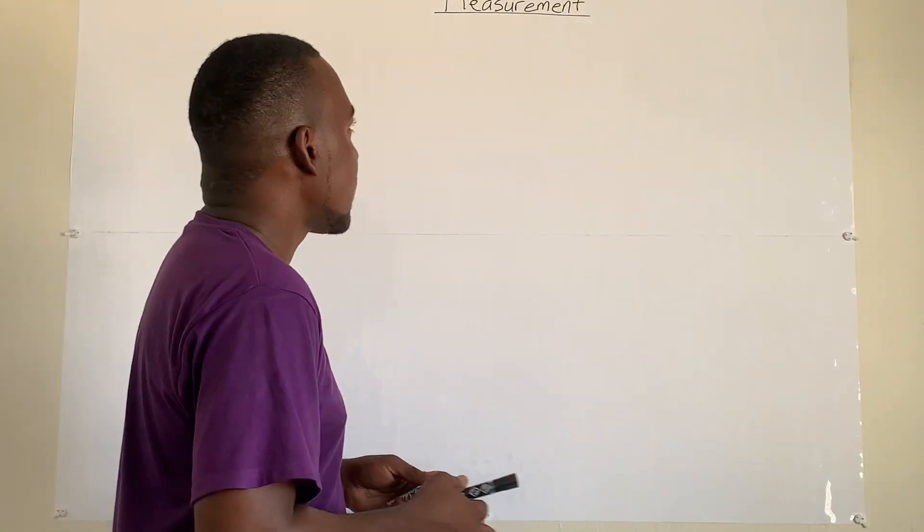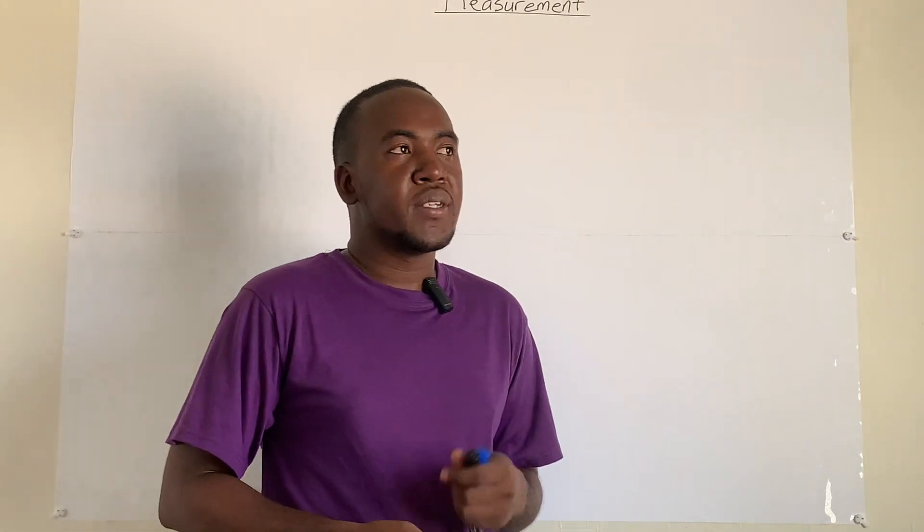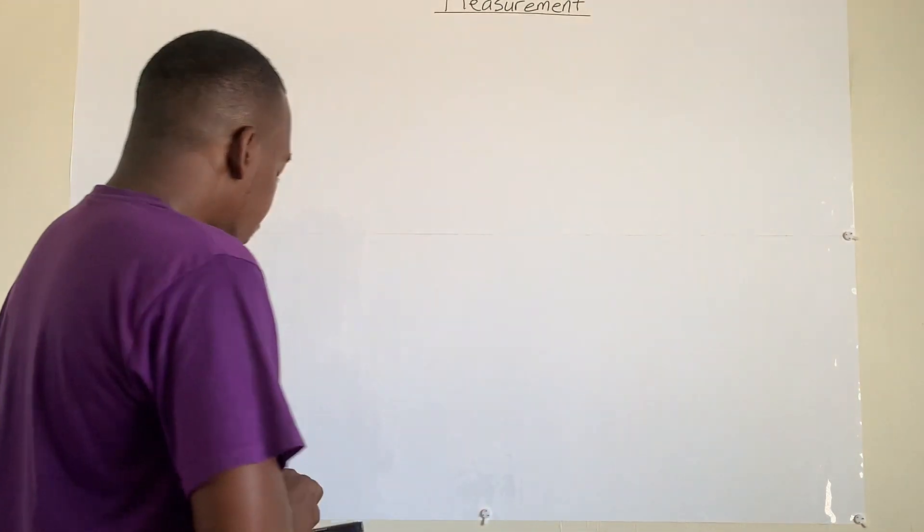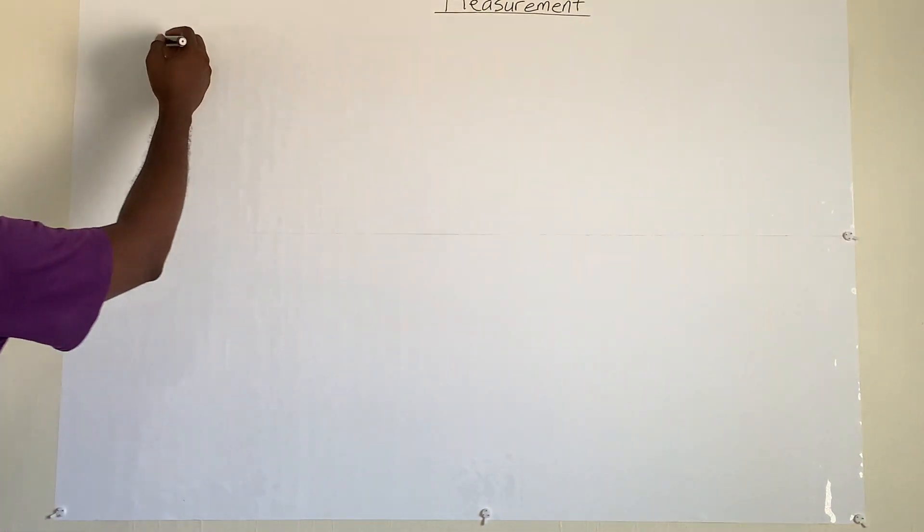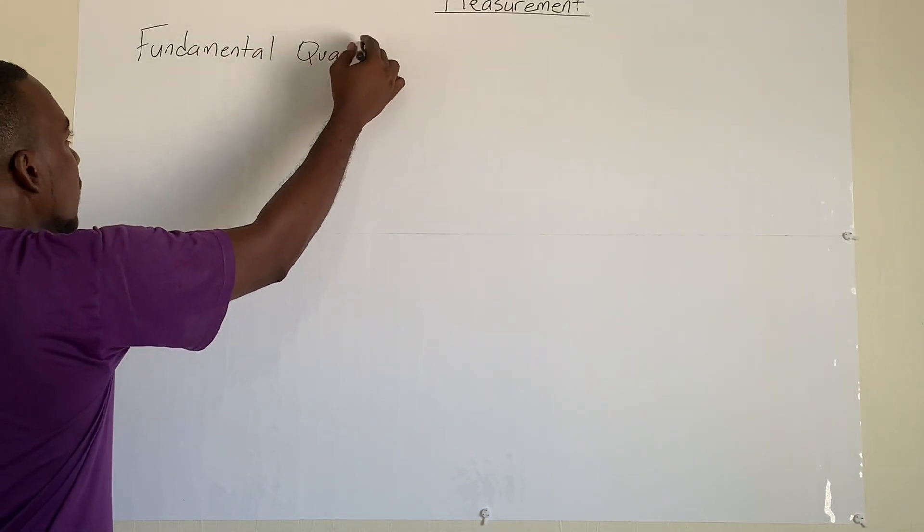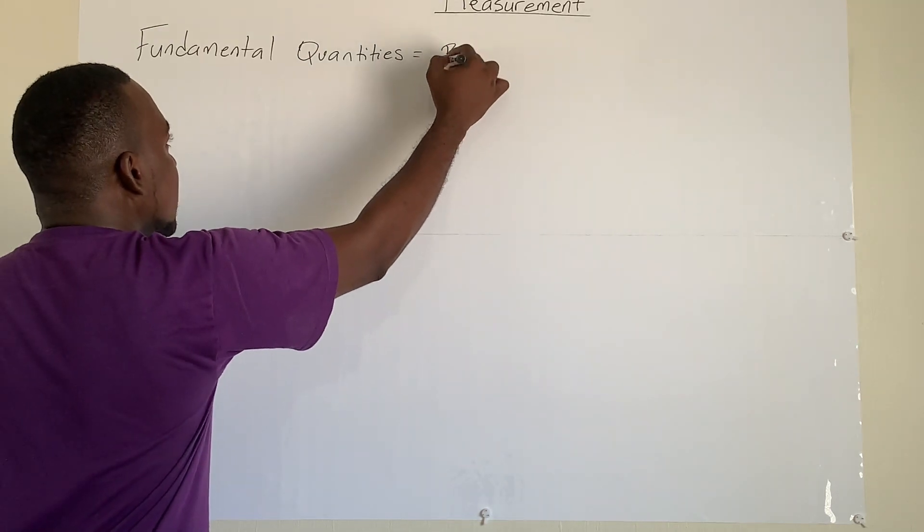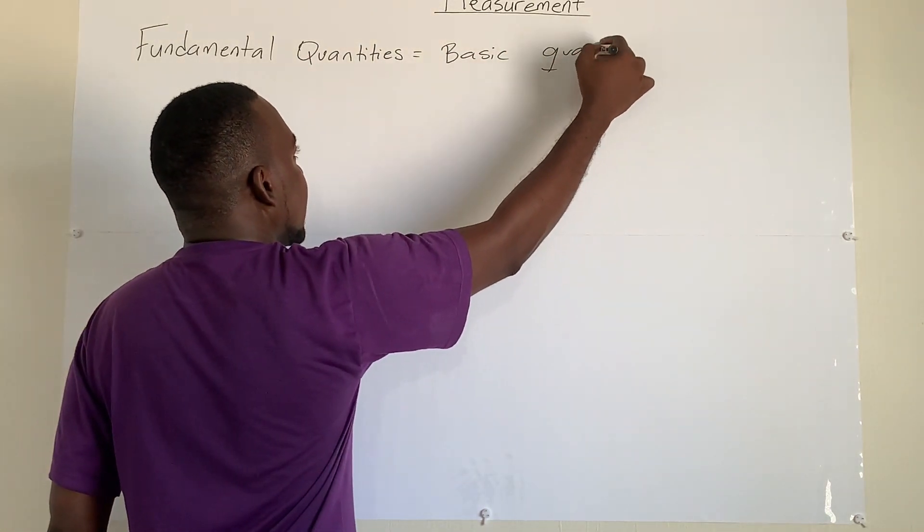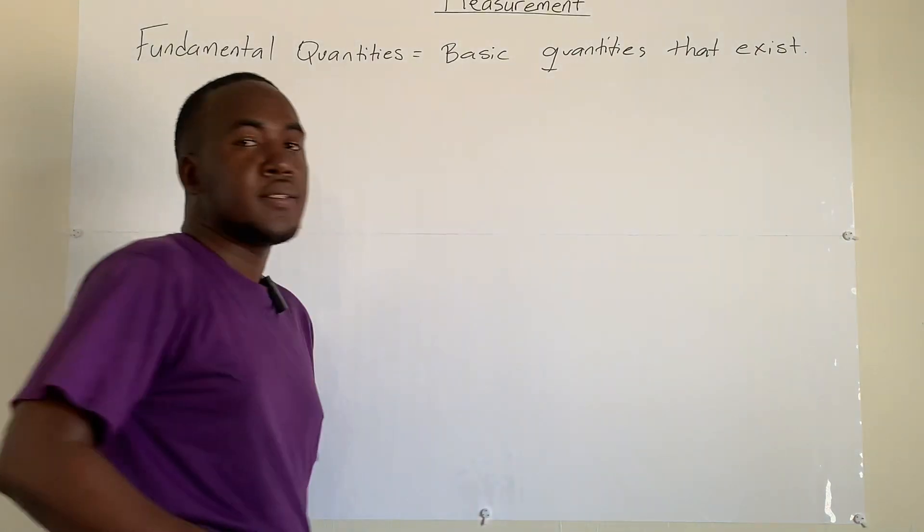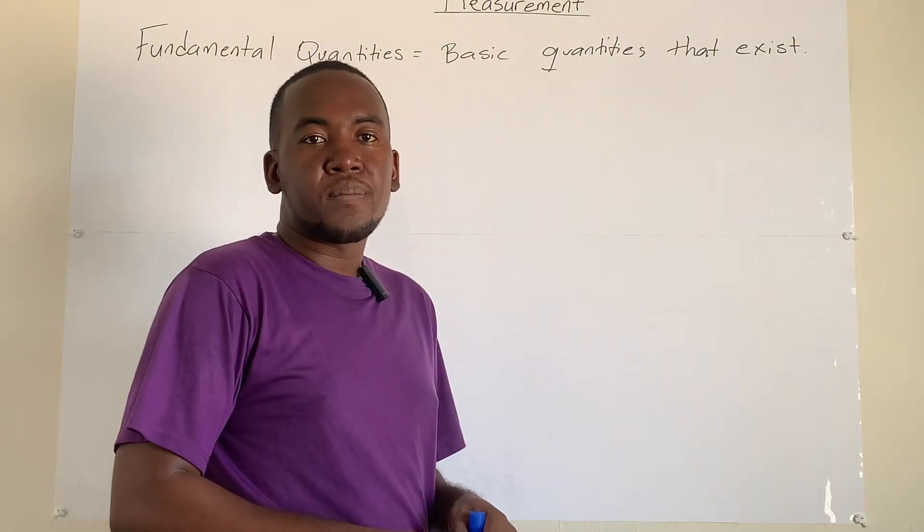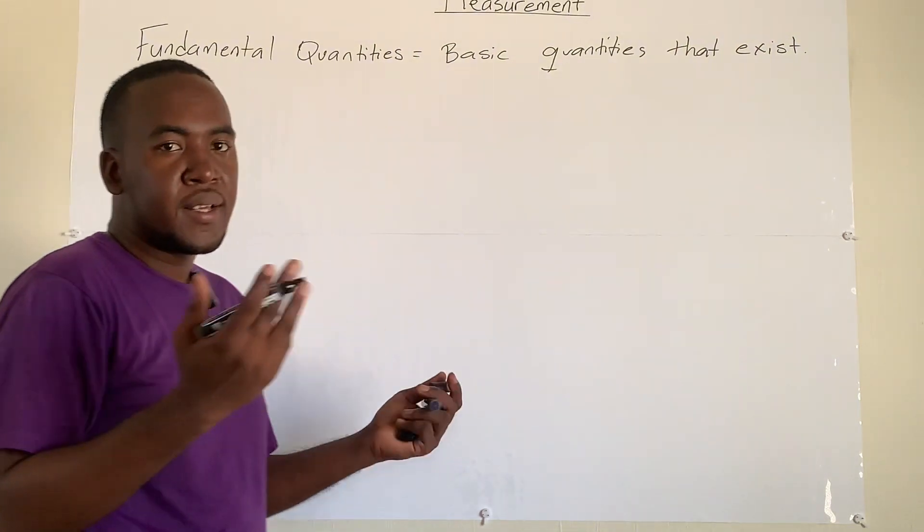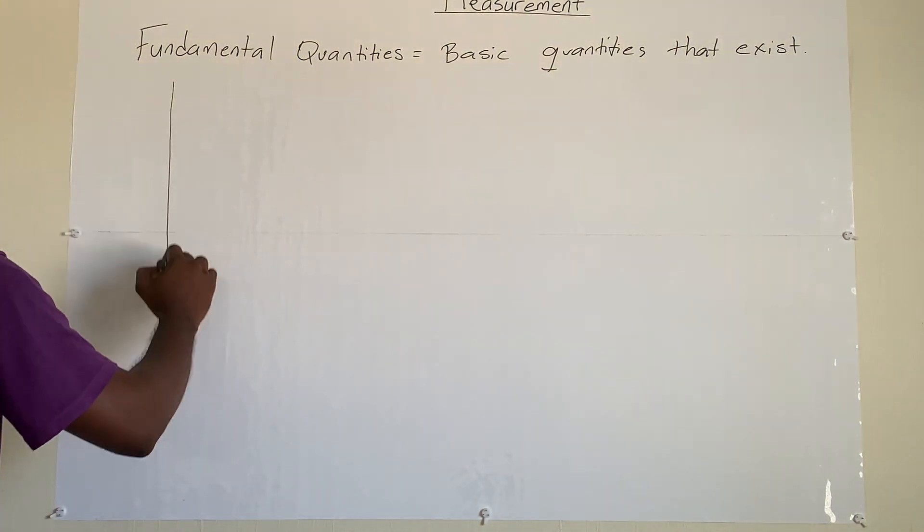Measurement in physics is very important because it also identifies the quantities that we utilize in physics. In physics, we will first talk about quantities called fundamental quantities. And these are the basic quantities that exist. So these quantities are the foundation in which all other quantities come from. At CSEC level, we focus on the five main ones. But in total, there are seven. So let's focus on the five main ones.